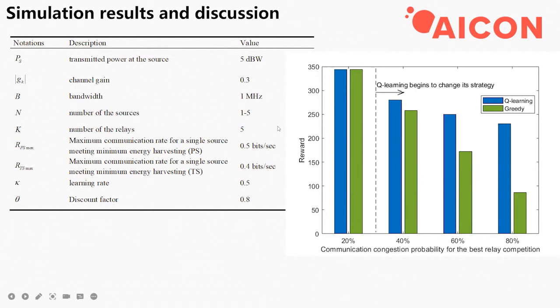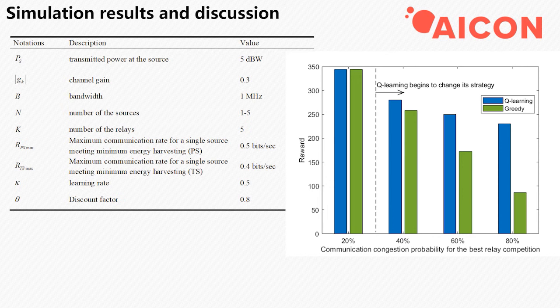We first observed the change in strategy for a single source node. When the congestion probability of the best relay increases, Q-learning starts to change the strategy to select the non-congested relay.